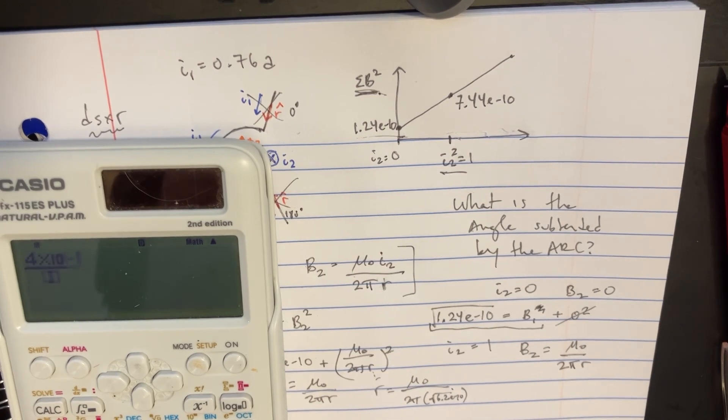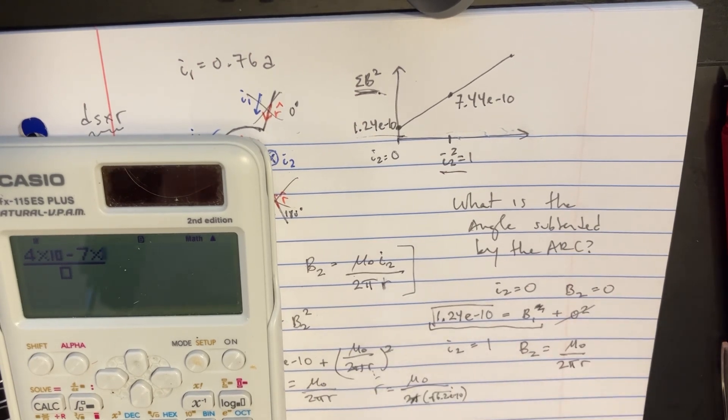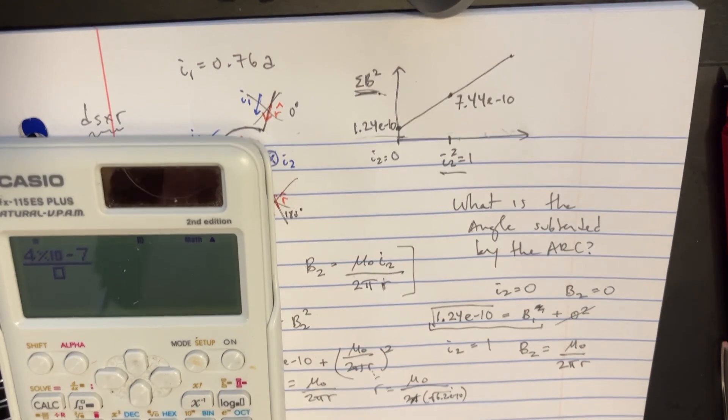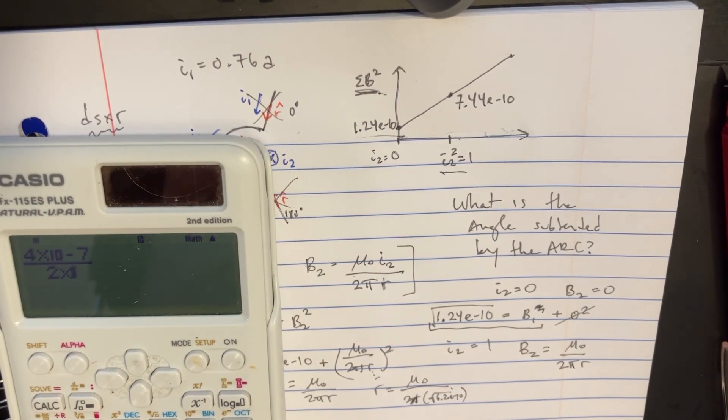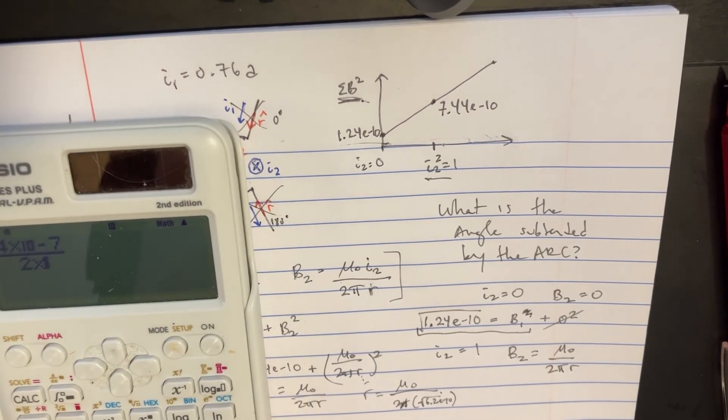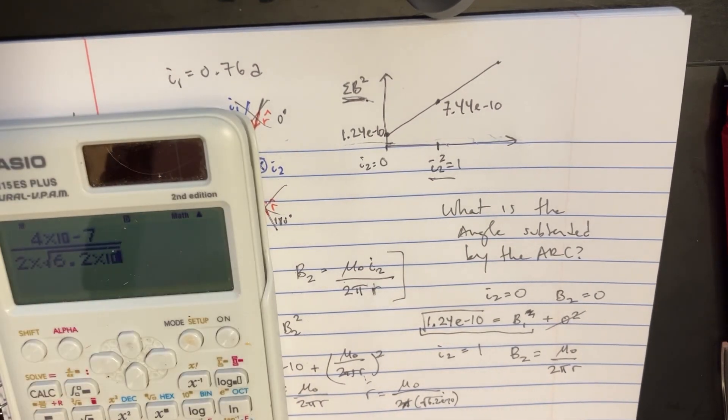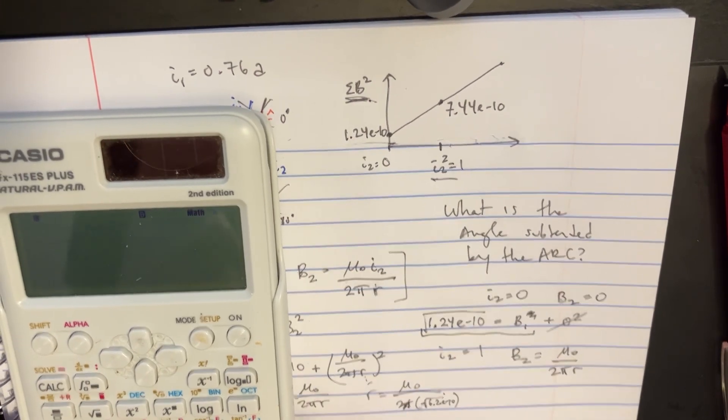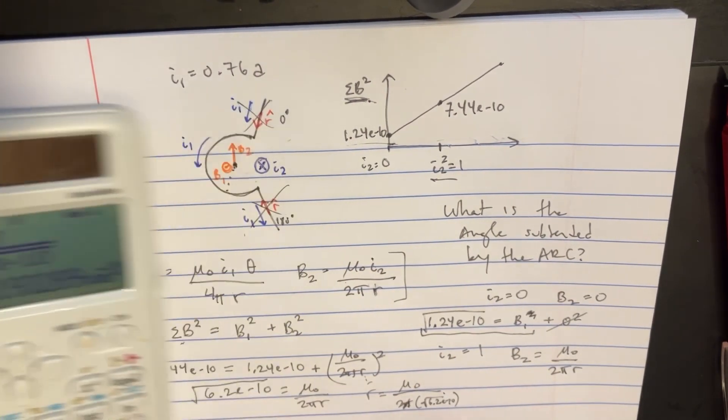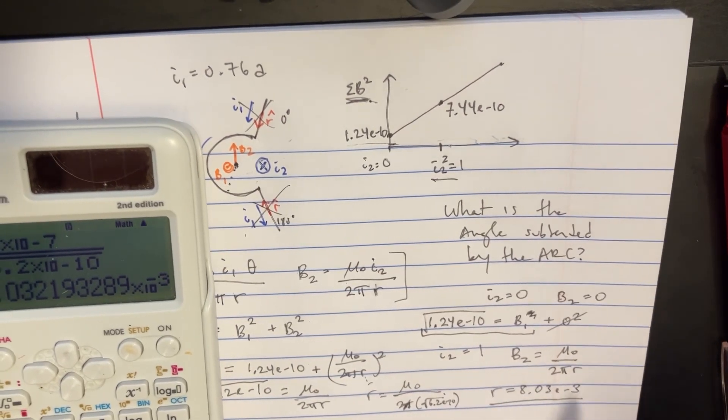So, it shouldn't be too difficult. Let's go 4, negative 7 times the pi. We'll get rid of the pi because there's no pi on top. So the mu naught on top and then we'll say 2 times the square root of the 6.2, e to negative 10. And I think that should give us the answer here. So that will give us the radius. R equals 8.03, negative 3.